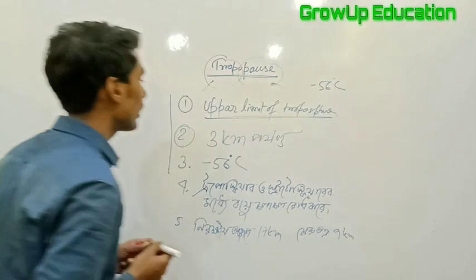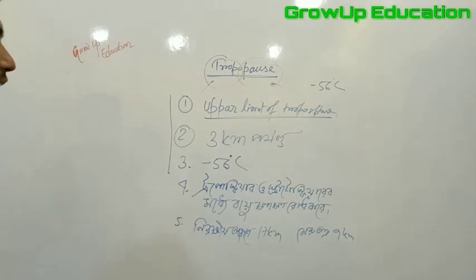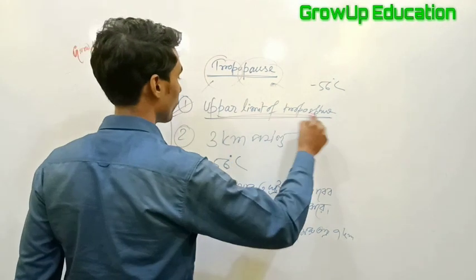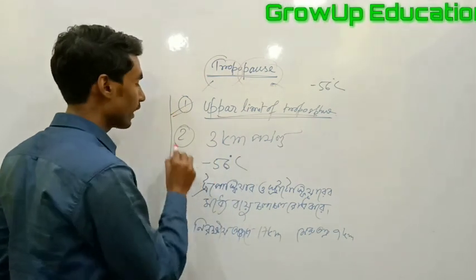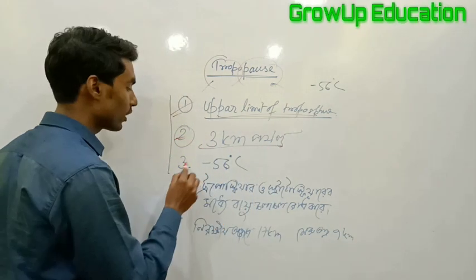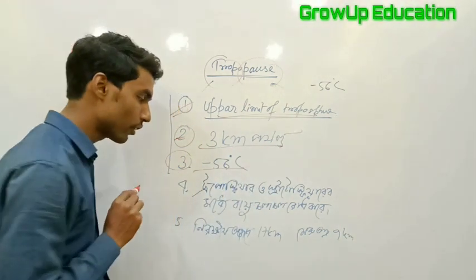Let's repeat this. The tropopause is the upper limit of the troposphere. It is at 30 km per meter. Here the temperature is minus 56 degrees Celsius.